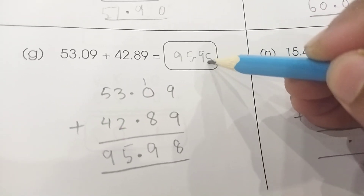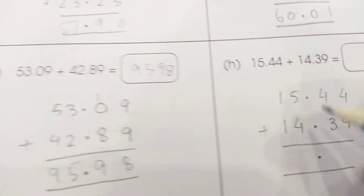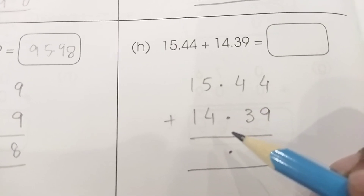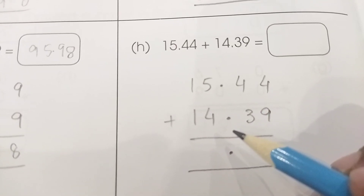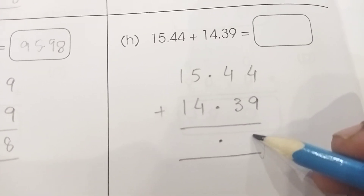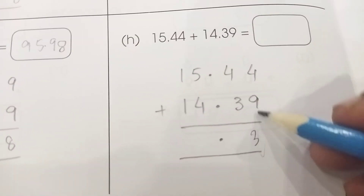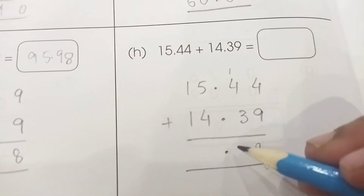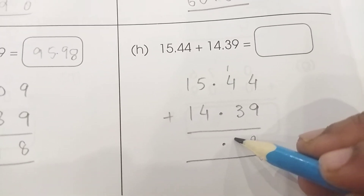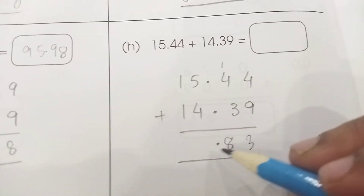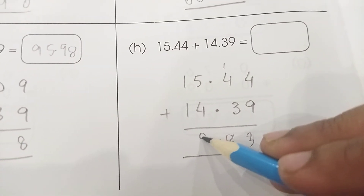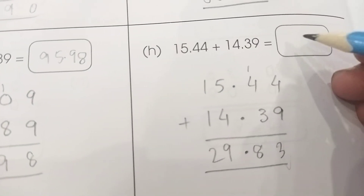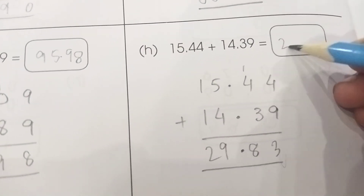For 15.44 plus 14.39: four plus nine is thirteen, carry one; four plus three plus one is eight; four plus five is nine; one plus one is two — so the answer is 29.83.